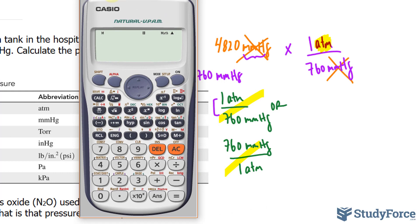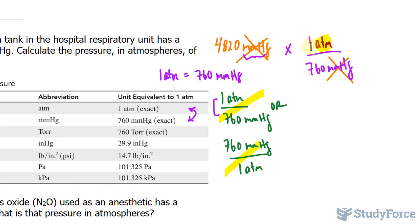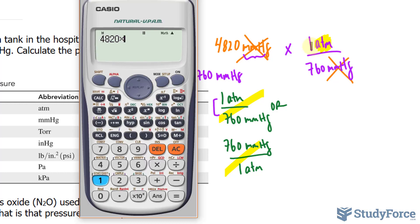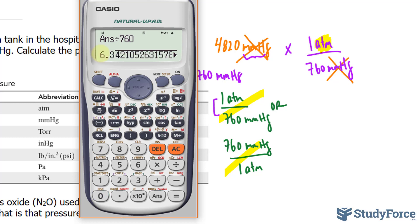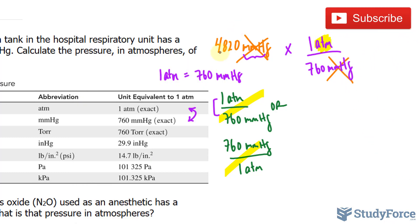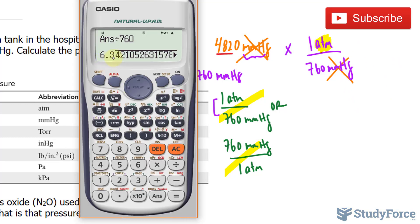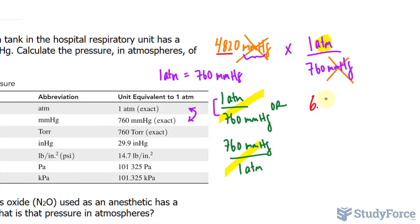So we turn on our calculator: 4820 times 1 — the number at the top — divided by the number at the bottom, 760. This gives you 6.34, and we want this to three significant figures because 4820 is three significant figures, so we write down 6.34 atmosphere.